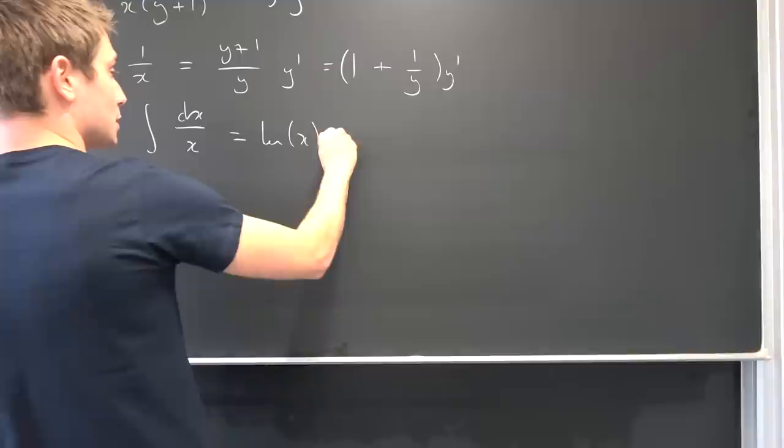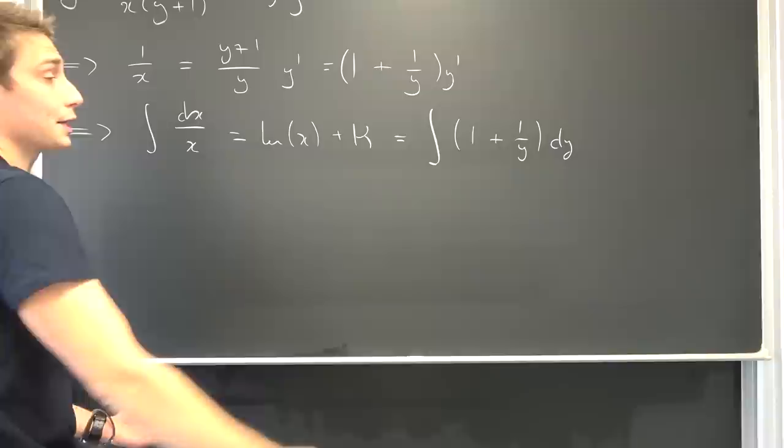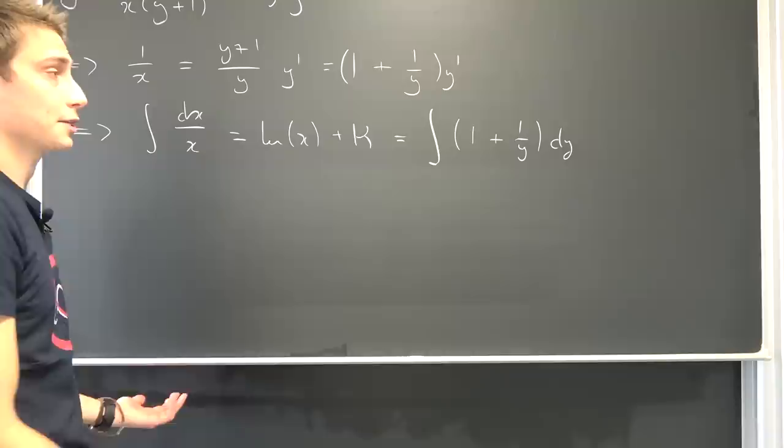Is equal to integrating this thing with respect to y. So meaning this is 1 plus 1 over y dy. We can break this up using linearity of the integral or we can integrate it directly. So this is going to give us y plus the natural log of y.